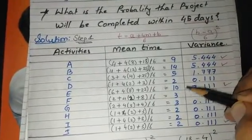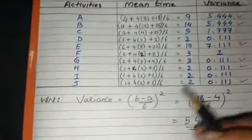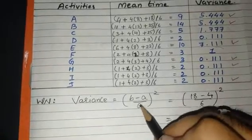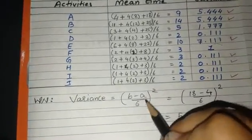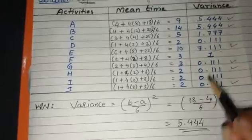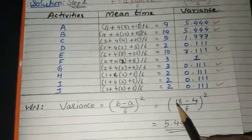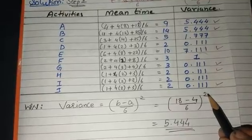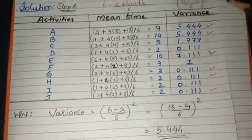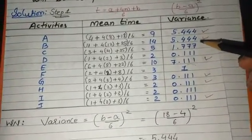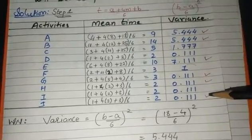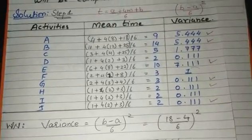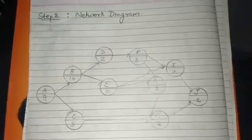After finding the mean time you have to find the variance. Variance has the formula: ((b - a) / 6)². For the first activity: (18 - 4) / 6 squared, and we will get 5.444. Similarly for all the activities I have found the variance.